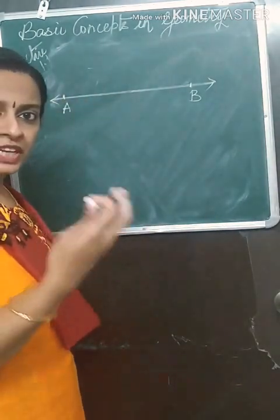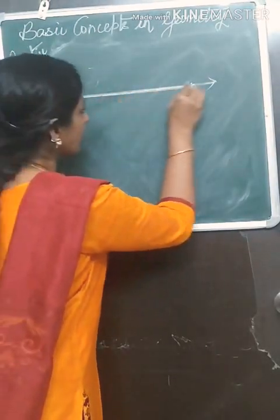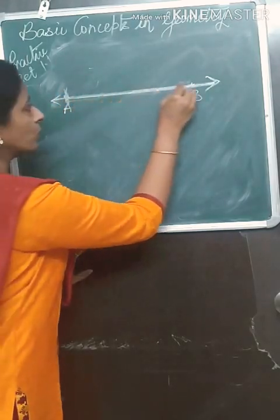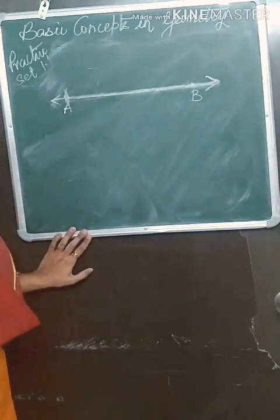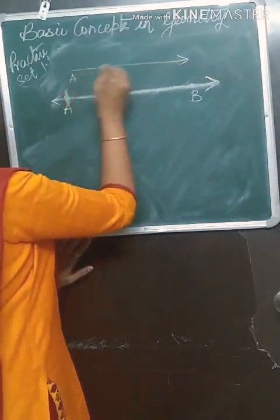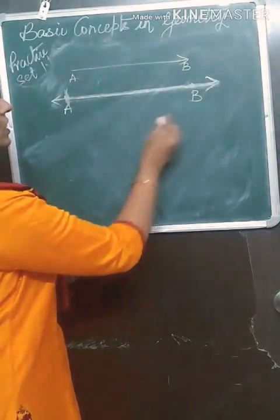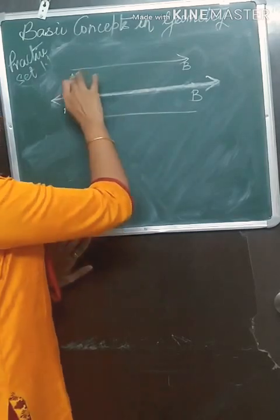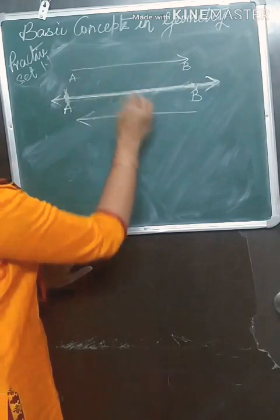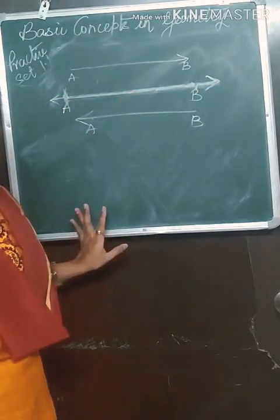A line is the union of ray AB and its opposite ray. Ray AB starts from A in one direction; the opposite ray of AB is from B going the other way, that is ray BA. These two rays together form line AB.